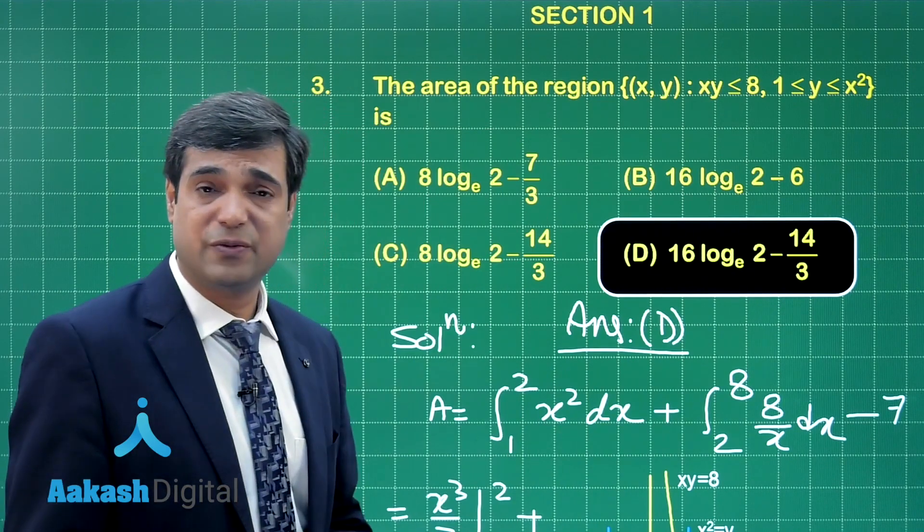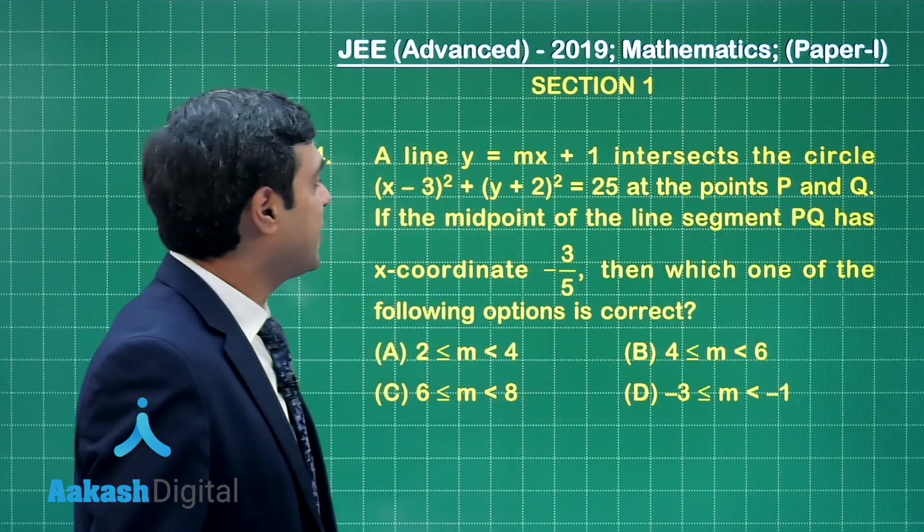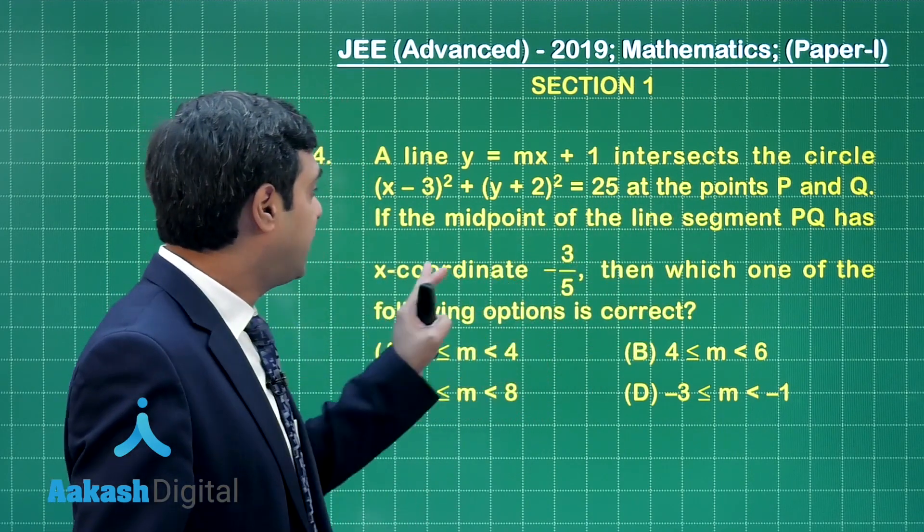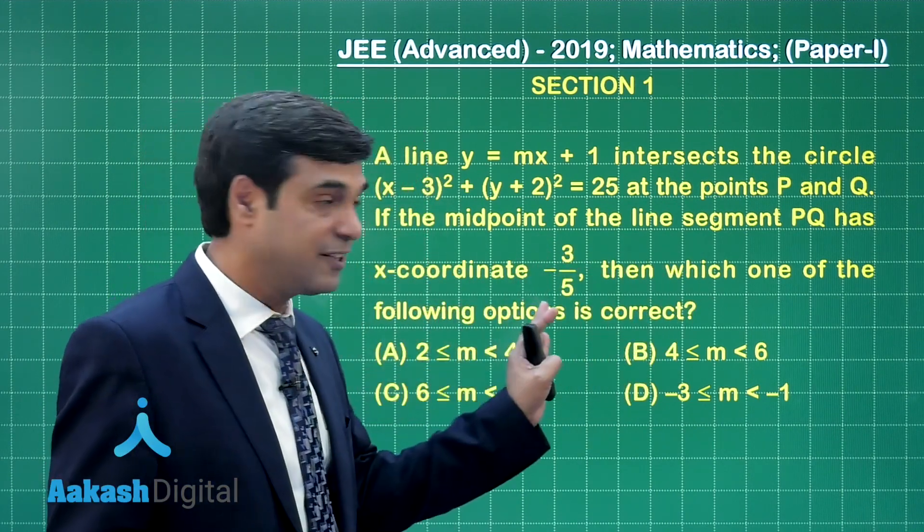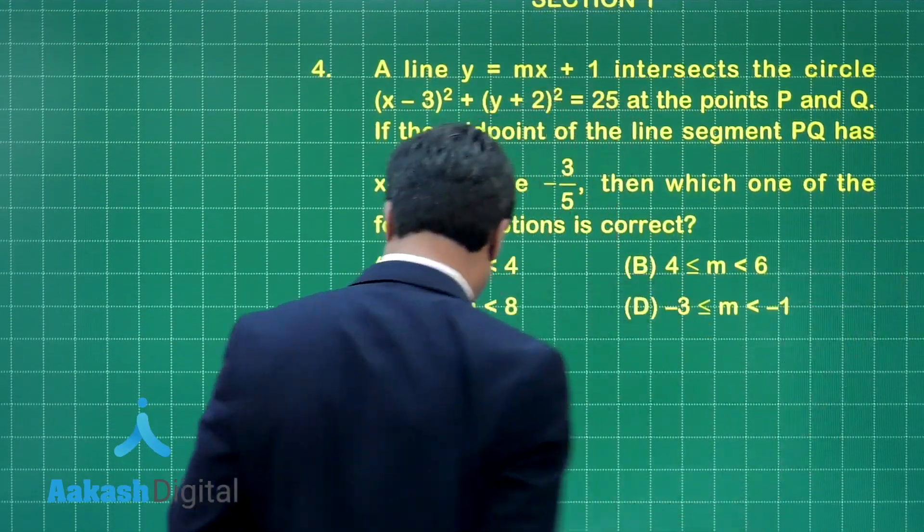So, I am sure this question is also clear. Let us move on to the next one that is question number 4. A line y equals mx plus 1 intersects the circle given at two points P and Q. If the midpoint of the line segment PQ has x coordinate as minus 3 by 5 then which one of the following options is correct?